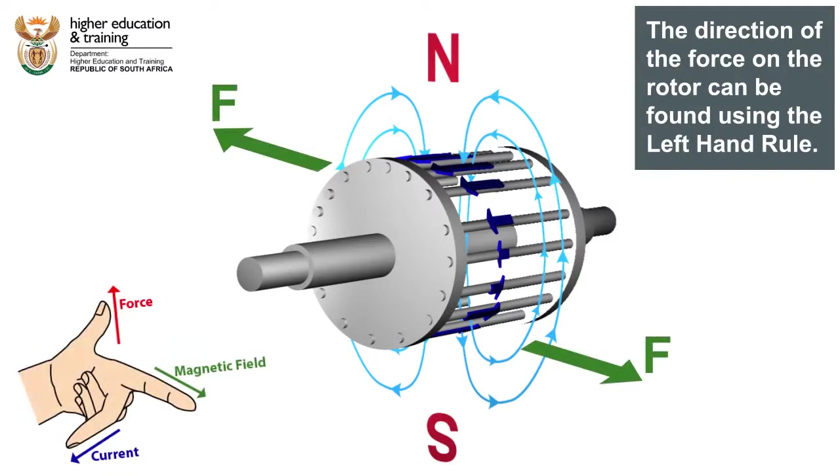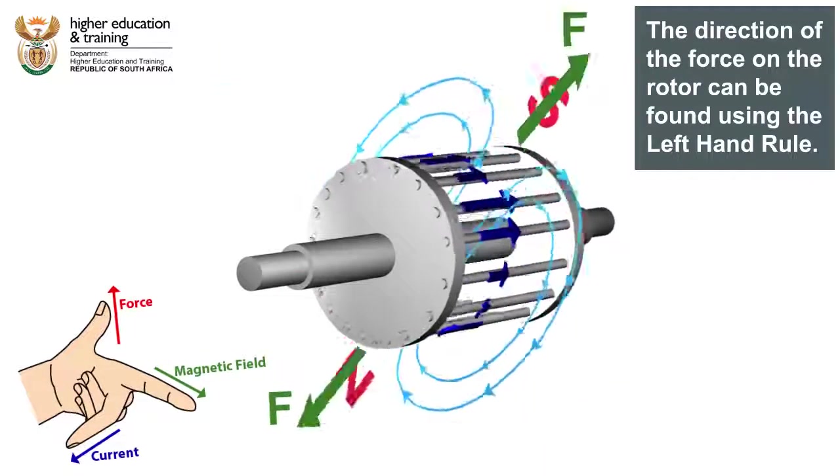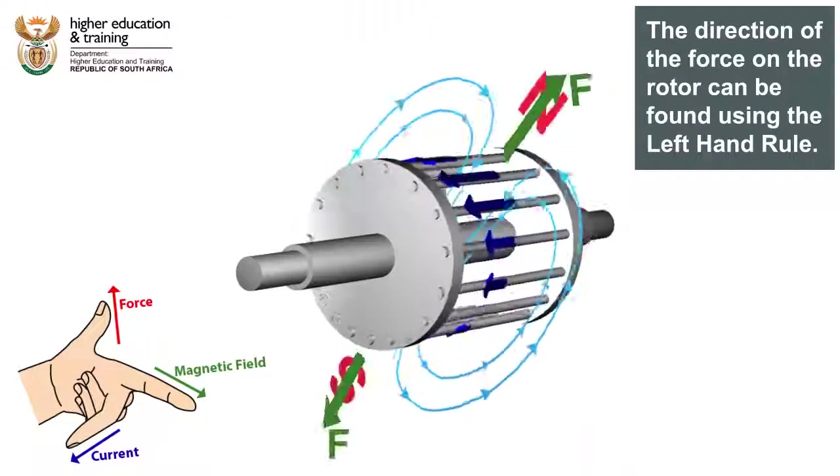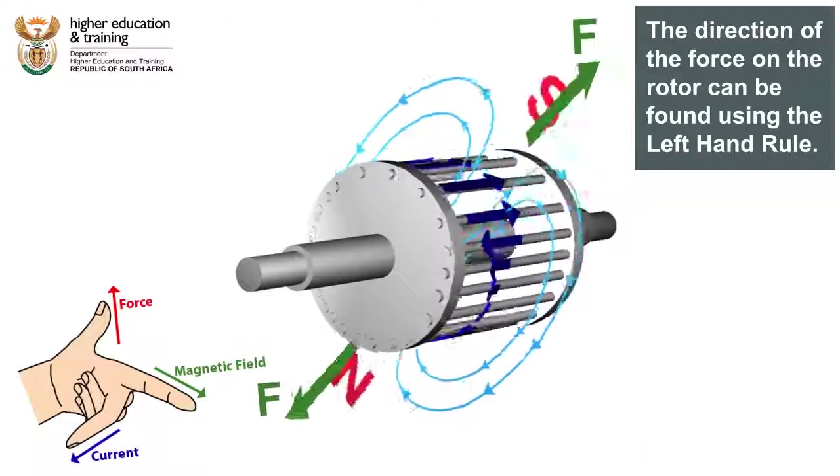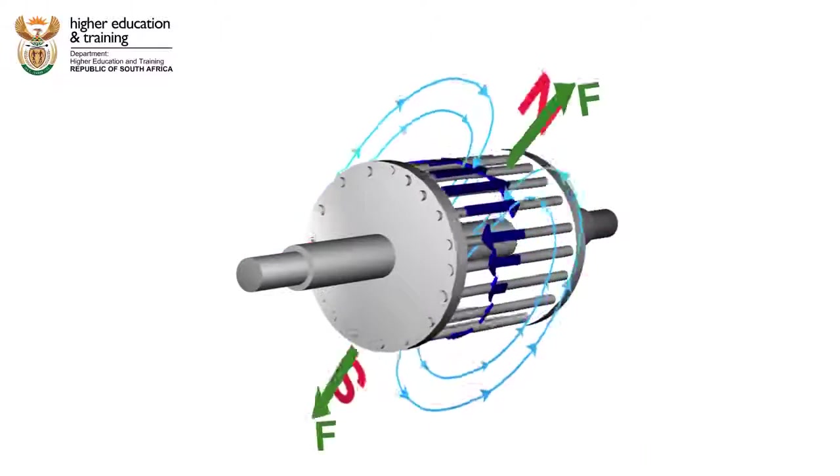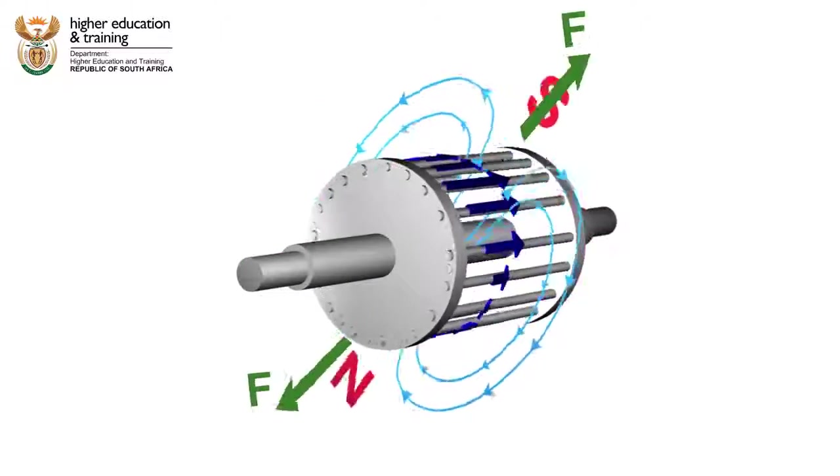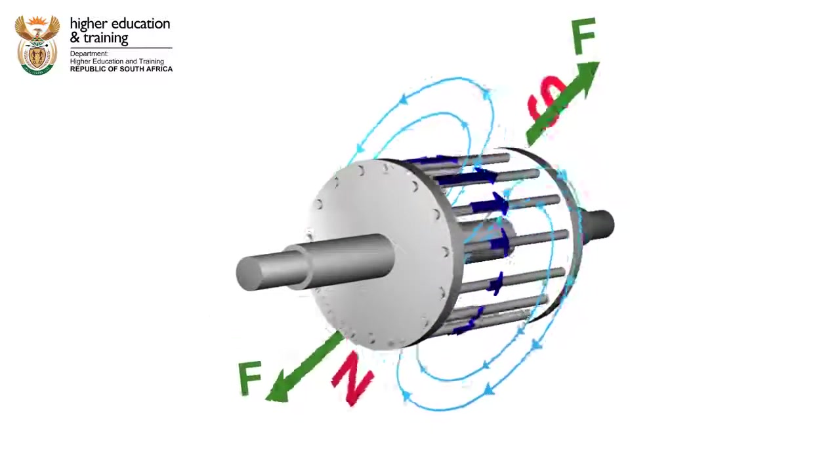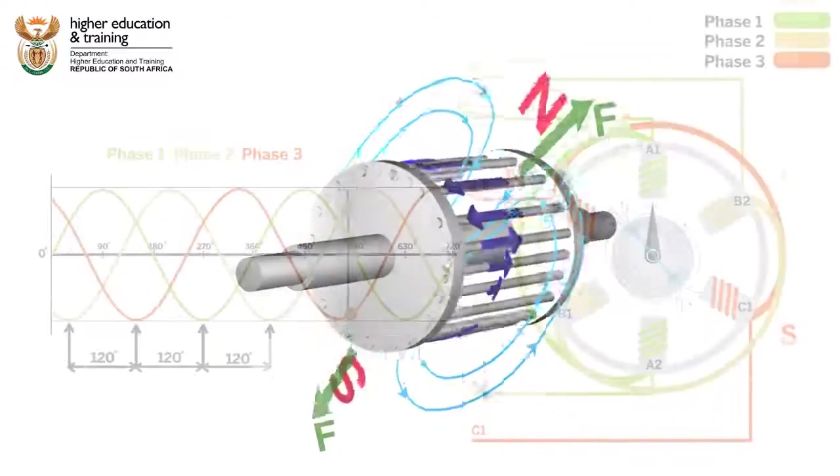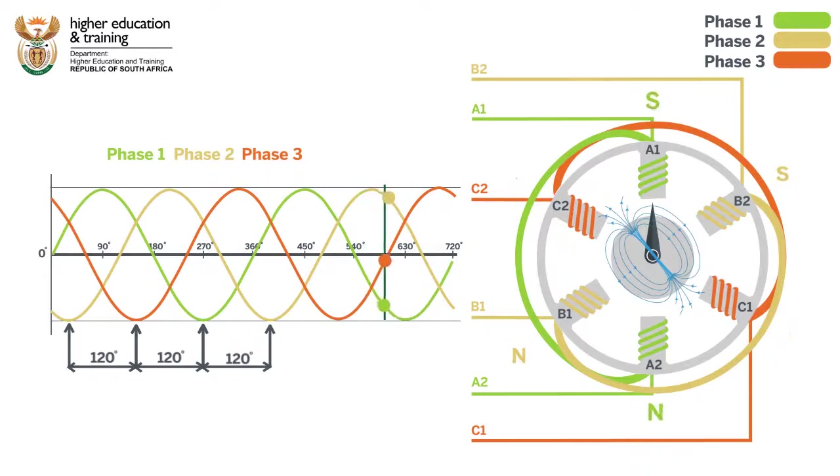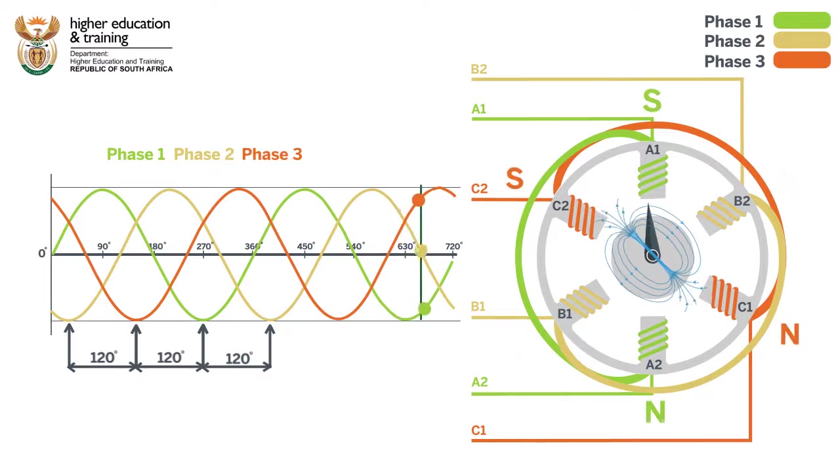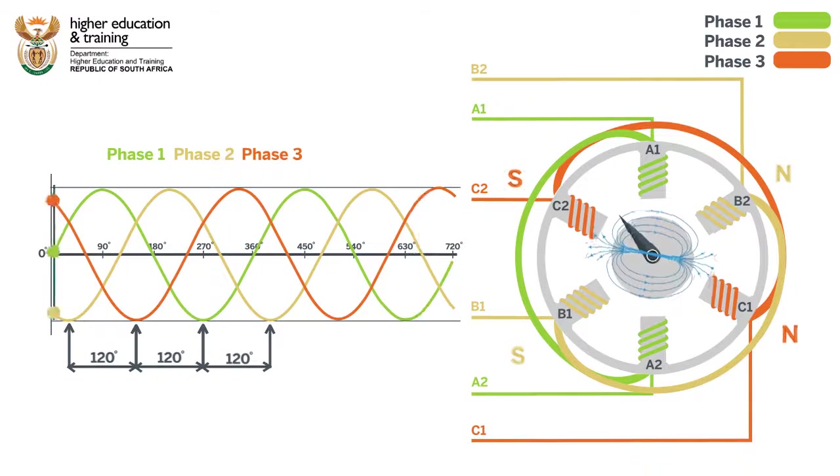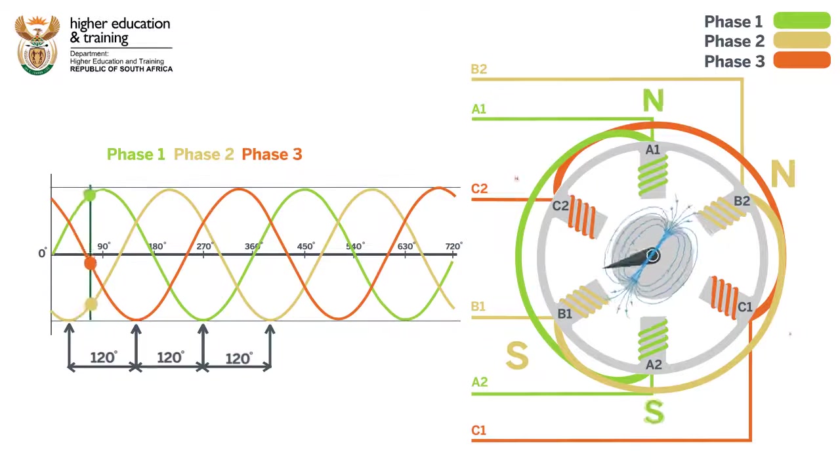The rotor also becomes an electromagnet. Therefore, the rotor electromagnet will try and line up with the stator field. But as the stator field is always rotating, the rotor ends up chasing it round and round. This induced magnetic field on the rotor follows the rotating magnetic field of the stator, and the rotor turns.